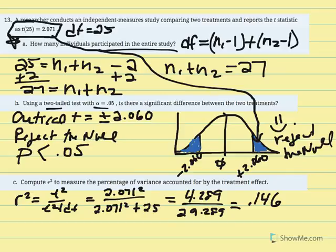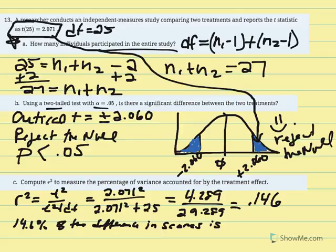What does 0.146 mean? We would say 14.6% of the difference in scores is due to treatment. We weren't given the sample means for this example — just the t statistic. But if we had that information, we could say 14.6% of the mean difference is a result of the different treatments received.